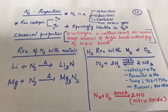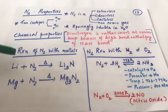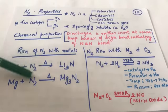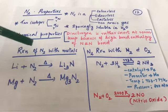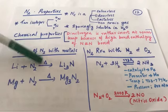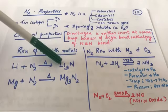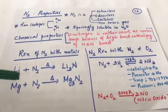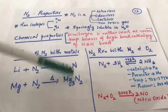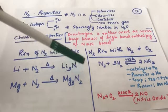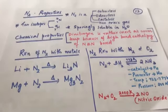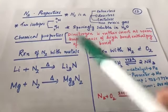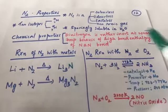Even though nitrogen is highly inert, at higher temperatures it reacts with metals. Lithium reacts with nitrogen to form lithium nitride (Li3N) — lithium has valency one and nitride has valency three. Magnesium reacts with nitrogen to form magnesium nitride (Mg3N2) — magnesium has valency two and nitride has valency three.